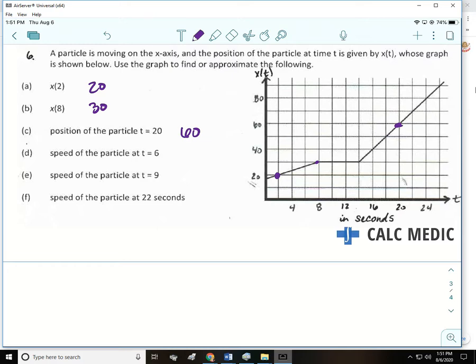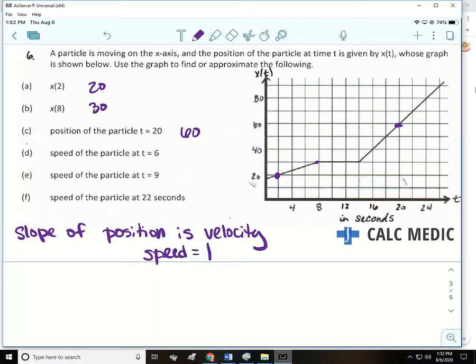D, E, and F are all asking to find speed. Is speed a rate of change? Yes, speed is a rate of change. So that means we're looking for slopes. Let's write that down. The slope of position is velocity. Is this problem asking you for velocity? No. It's asking for speed. So what's the relationship between speed and velocity? Velocity has direction. Right. So if we know the velocity and we want to find the speed, speed doesn't have direction, so we just do the absolute value.